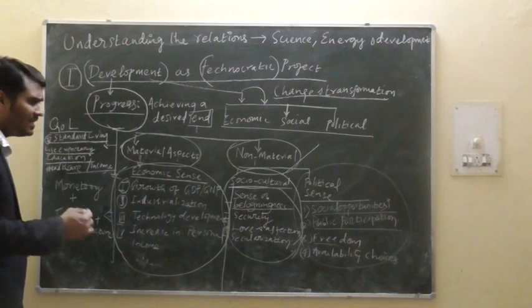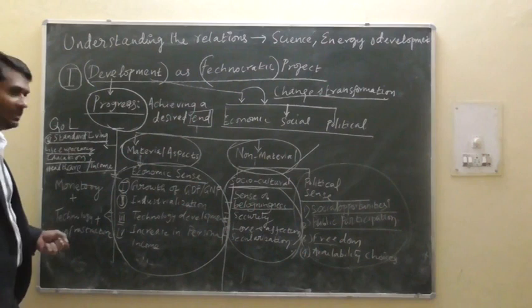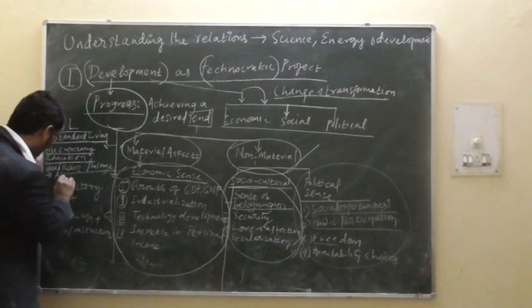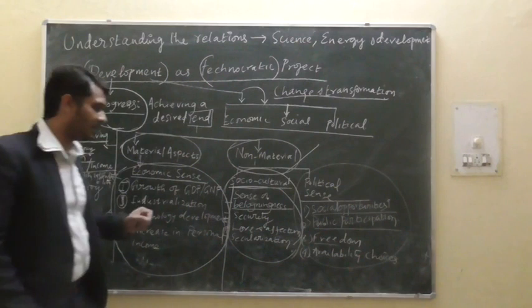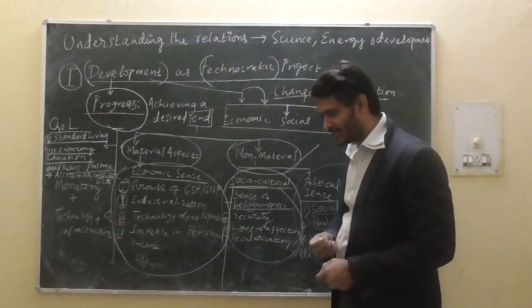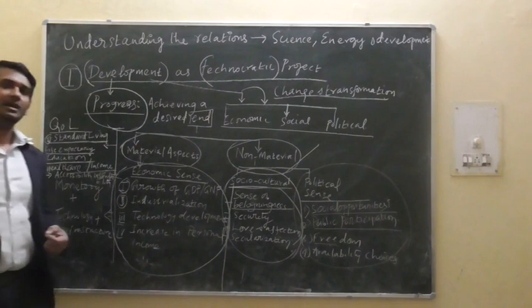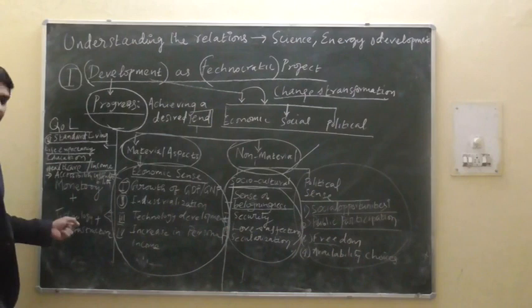Development also refers to taking basic goods to all citizens of the country — improving accessibility and affordability. Affordability of basic goods such as food, clothes, shelter, water, and energy — these are very basic necessities of life. Whether we are able to take those goods to the last citizen of the country is part of the quality of life understanding.